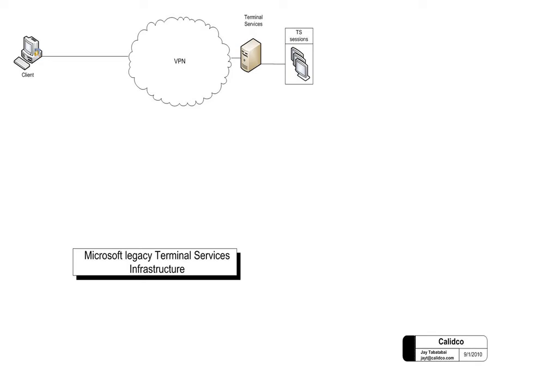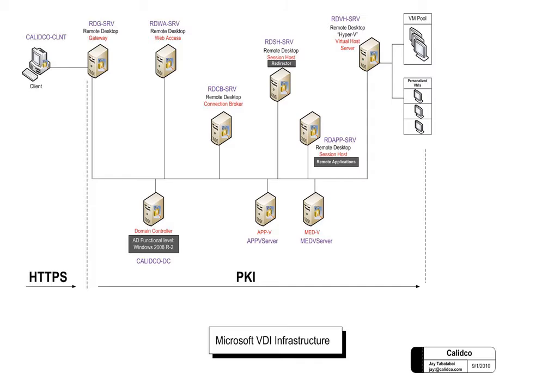This is traditional terminal services before VDI came into the picture. In the older Windows 2003, we had terminal services and the client would connect through some kind of VPN, which is also becoming obsolete, and would request a session. The terminal services would have all the programs installed and would return the program and a desktop to the client.